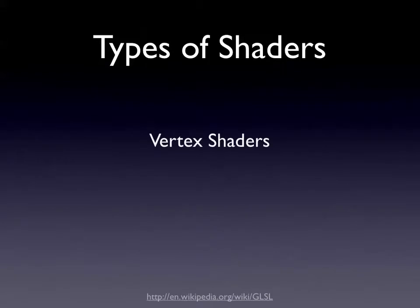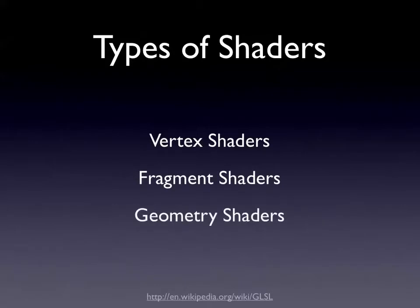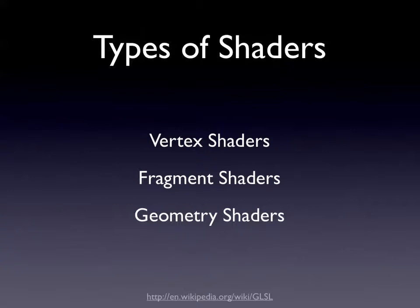Types of shaders: vertex shaders modify vertices; fragment shaders modify fragments, which are the texture components. The last type, which is quite new, is a geometry shader. A geometry shader allows you to actually create vertices at runtime as the shader is running. You can pass vertices from your vertex shader and create a whole heap of extra information to pass on to your fragment shaders. Instead of having data that never changes on your GPU, you can actually modify it — you can basically do everything you could do on the CPU, but on the GPU.